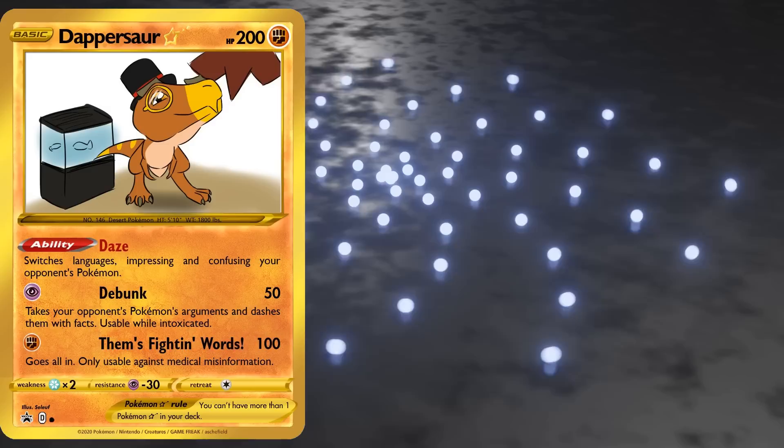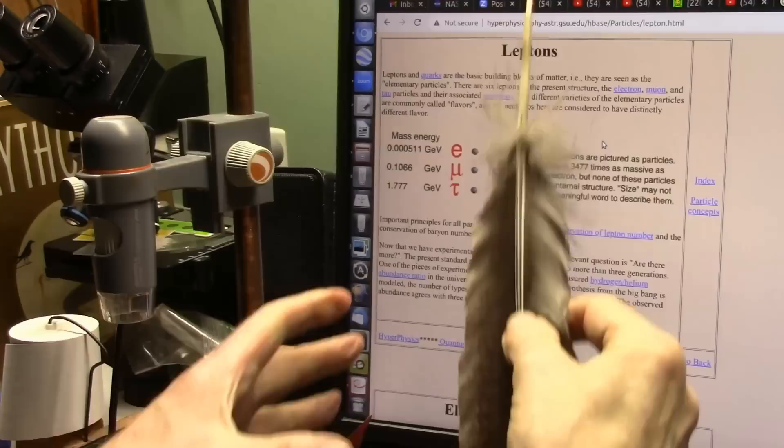Now, leptons and quarks are the basic building blocks of matter, they think. And we've been given literally nothing to think that's wrong. They are seen as the elementary particles, the most basic particles.